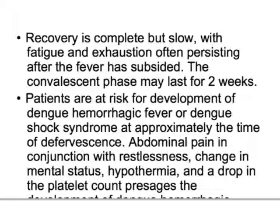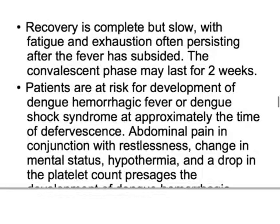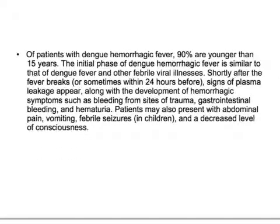Monitor patients by laboratory findings rather than clinical signs alone. You need to monitor platelet count and packed cell volume (PCV) — a PCV rise of more than 20% is a very important laboratory finding. Dengue hemorrhagic fever: 90% of cases are younger than 15 years. The initial phase is similar to dengue fever and other febrile viral illnesses, making it difficult to diagnose. Shortly after the fever breaks, sometimes within 24 hours, signs of plasma leakage appear, along with hypoalbuminemia.